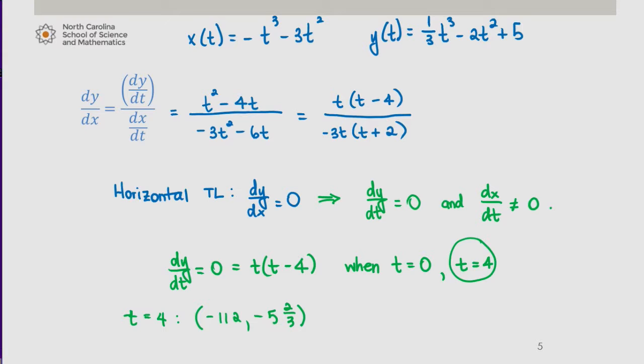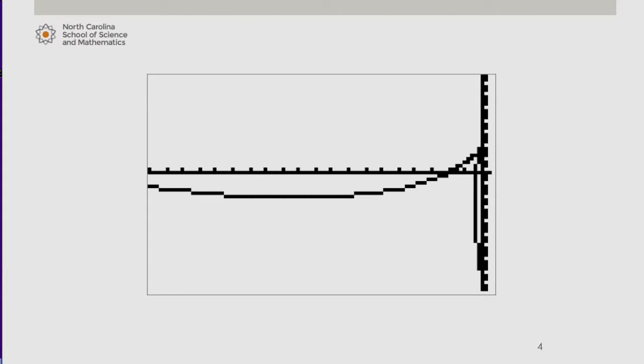So looking back at our graph, we have a horizontal tangent line somewhere along here. Of course, the pixelation of the calculator doesn't allow us to really focus exactly where that horizontal tangent line is, but we see it's when t is 4. We have approximately -112, this window is to -200, so that should be just about here. So (-112, -5⅔) is the point at which we have a horizontal tangent line.